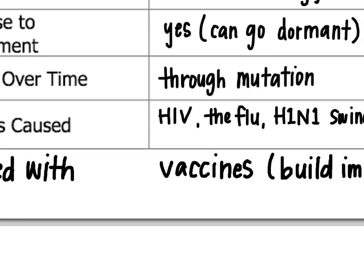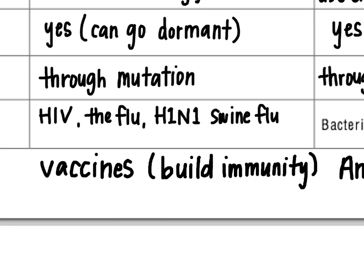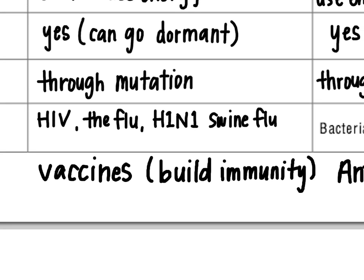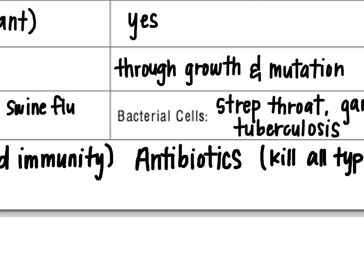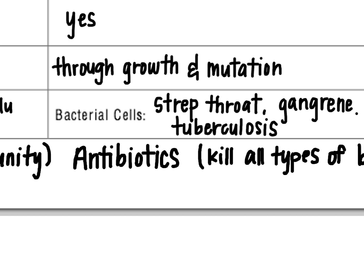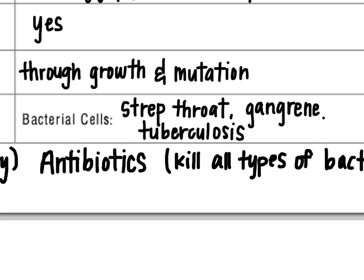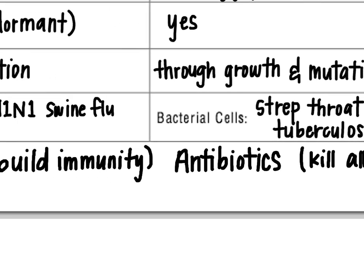Diseases caused by viruses include HIV, the common cold, the flu (which is influenza), and the H1N1 virus — that's swine flu. These are all caused by viruses. Diseases caused by bacterial cells include strep throat, gangrene, or tuberculosis. There's an endless number of bacterial infections — anything you would take antibiotics for is bacterial.